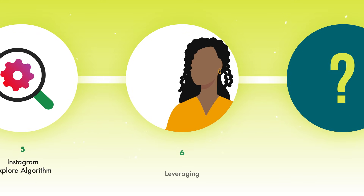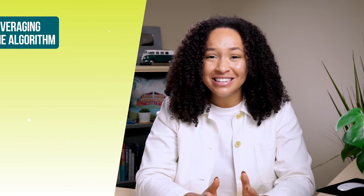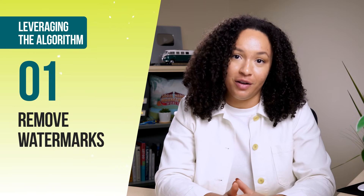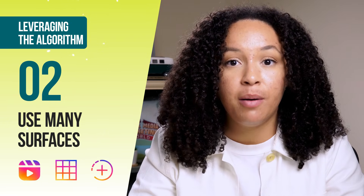Before we get into some myth-busting around hot topics like shadow banning, here are some quick tips for leveraging the algorithm. First, when you're creating video content, make sure you're using as many native features as possible — meaning if you're posting an Instagram Reel, ideally you don't want to have a TikTok watermark or TikTok text on your video. Two, make sure you're using as many of the different surfaces as possible in your content strategy, as this is going to increase the likelihood that your content is prioritized in the multiple algorithms.